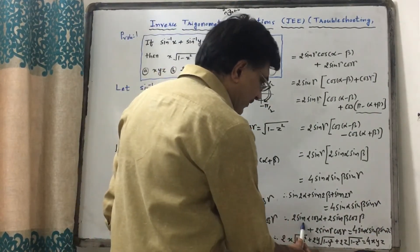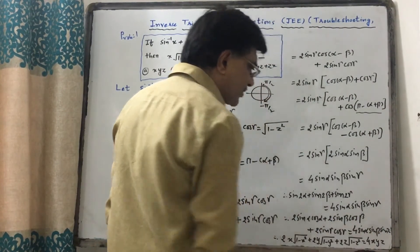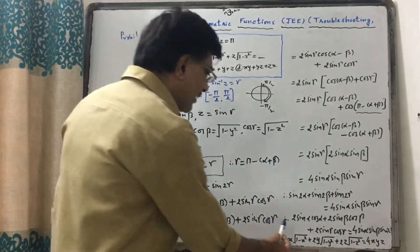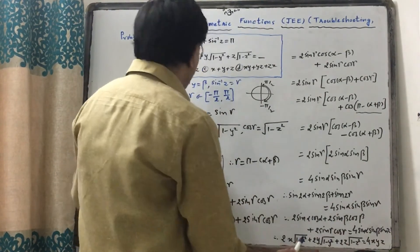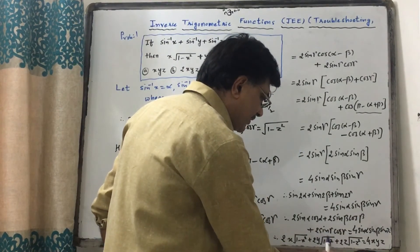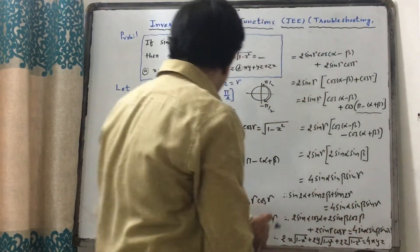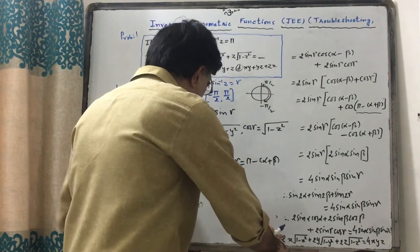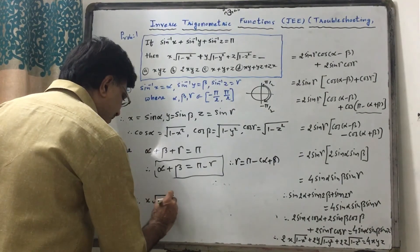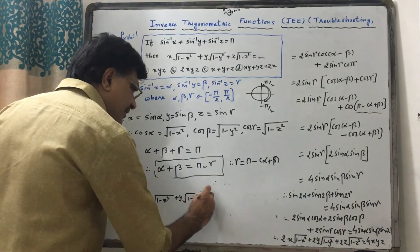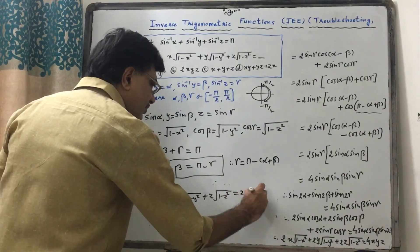Now substituting back: sin2α = 2sinα·cosα, sin2β = 2sinβ·cosβ, sin2γ = 2sinγ·cosγ, and their sum equals 4sinα·sinβ·sinγ. Dividing both sides by 2, and substituting sinα = x, cosα = √(1−x²), and similarly for y and z, we get: x·√(1−x²) + y·√(1−y²) + z·√(1−z²) = 2xyz.